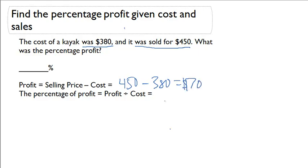Now that we know the profit, we can figure out the percentage of profit. The percentage of profit is going to be the profit divided by the cost. In this case, we'll have $70 divided by a cost of $380 and that will give us 18.42%.